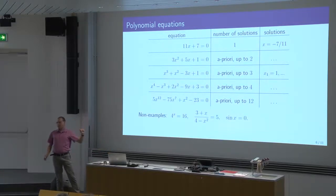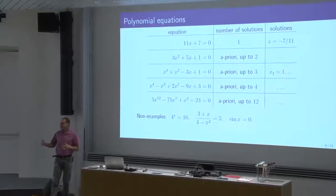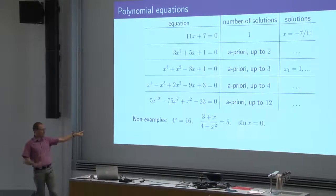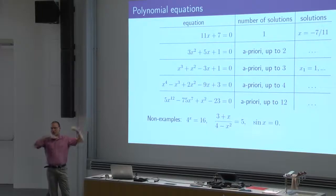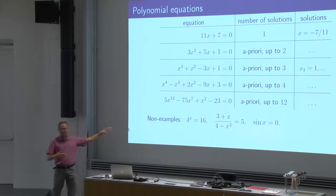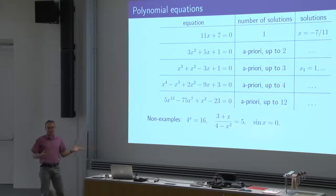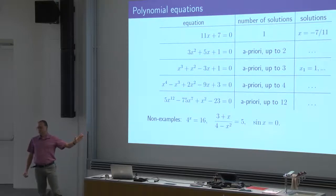Non-examples of polynomial equations: 4 to the x equals 16 — that's not polynomial, it's an exponential equation because x appears in the exponent. A fraction with x in the denominator is also not polynomial. Sine x equals 0 has infinitely many solutions and is not a polynomial equation. Polynomial equations only have powers of x.